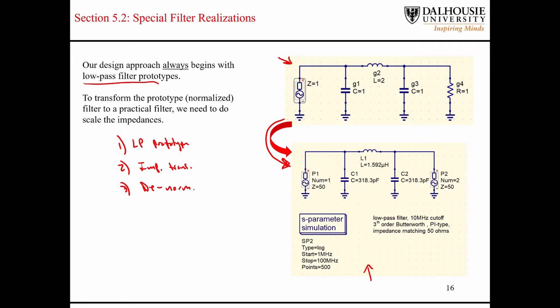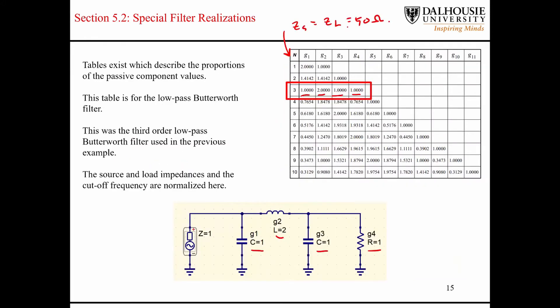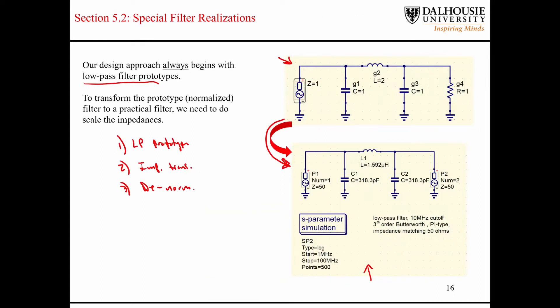In this circuit down here on the bottom, it's a low-pass filter. The topology hasn't changed — we didn't add any resonance structures; the capacitors are all in their original locations, same with the inductors. So even for a low-pass filter design, we start with a low-pass filter prototype, perform impedance transformations, and then do our denormalization. In the end, our source impedance ends up being 50 ohms, and our capacitor and inductor values end up being something somewhat reasonable.